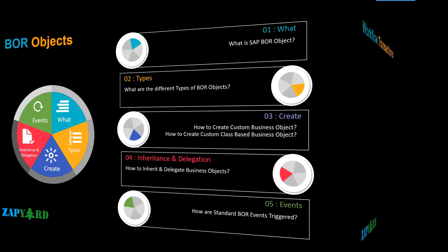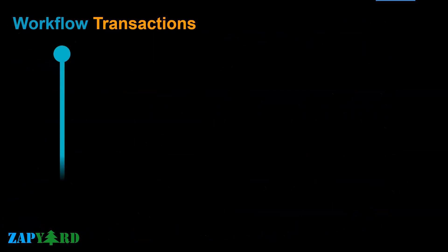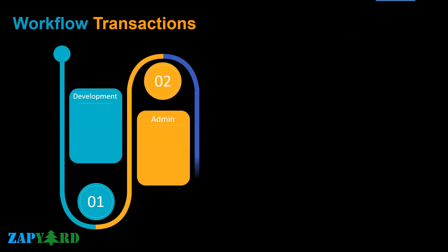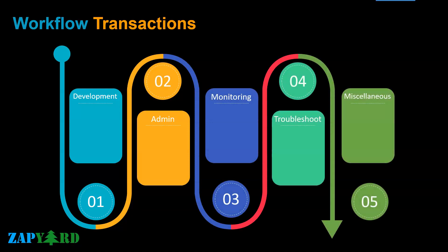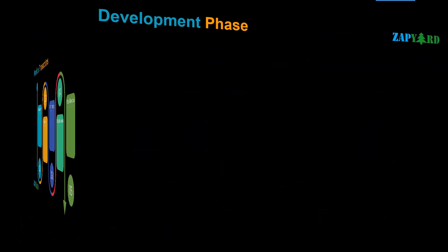Next, the trainer will walk you through all the important transactions needed in SAP Business Workflow. He will start with development t-codes, followed by administration t-codes, monitoring and troubleshooting transactions, and many other useful t-codes. One of our very good friends and workflow experts always says: SAP Workflow is 40% development and 60% testing. The more you test, the better workflow you design and develop. All these t-codes would help all workflow consultants build better workflow products.